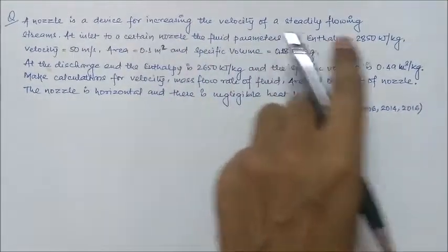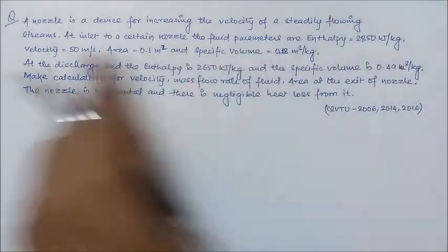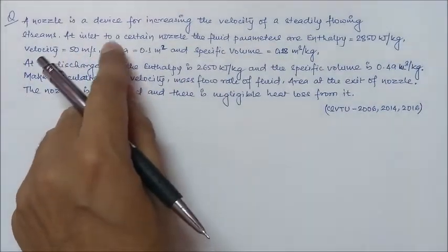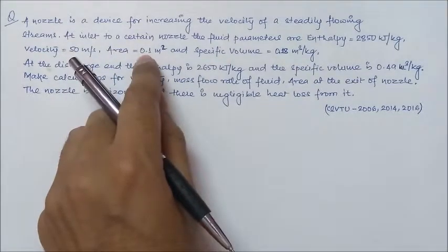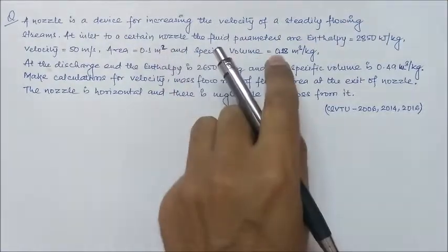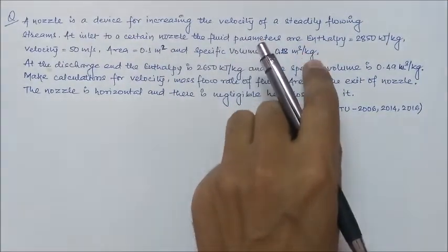At inlet to a certain nozzle, the fluid parameters are enthalpy 2850 kJ per kg, velocity 50 meter per second, and cross-sectional area at the inlet is 0.1 meter squared and specific volume 0.18 meter cube per kg.